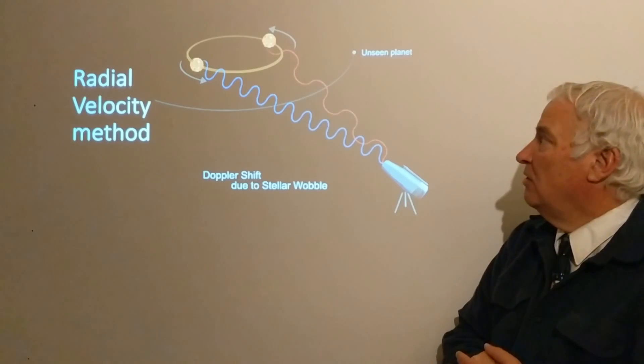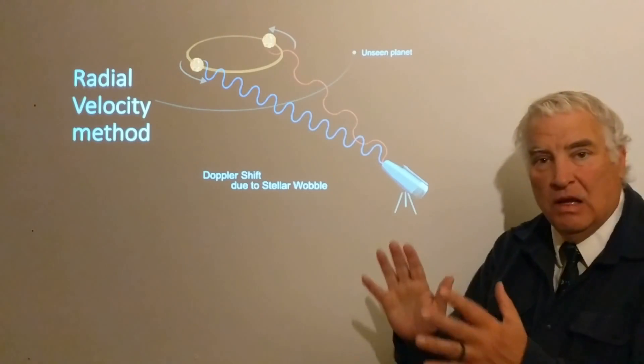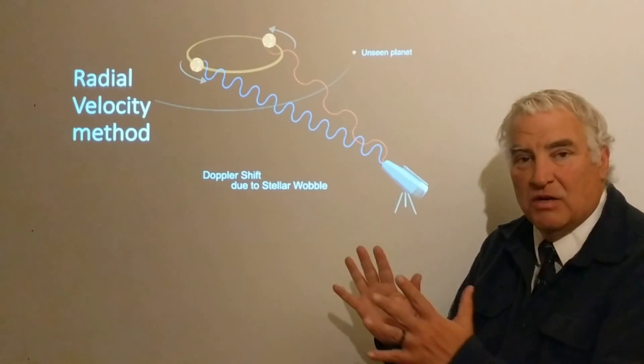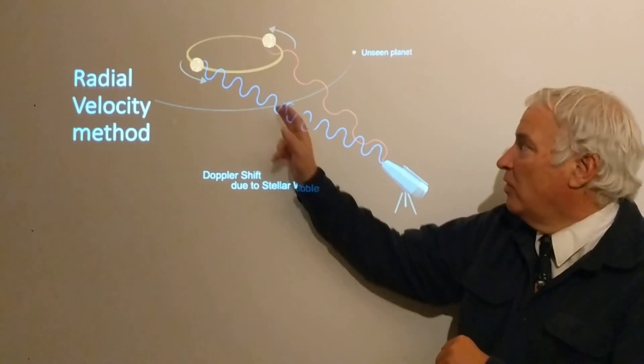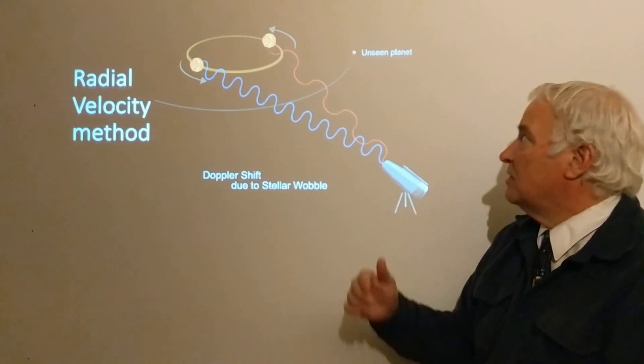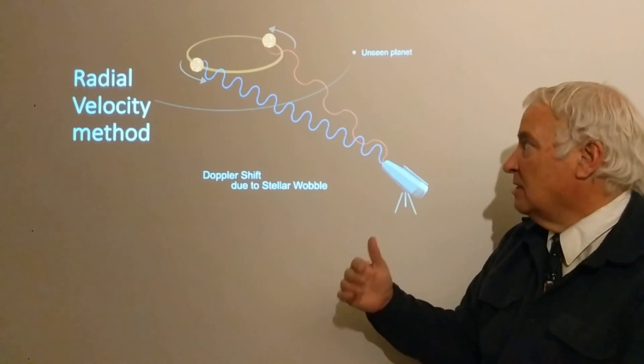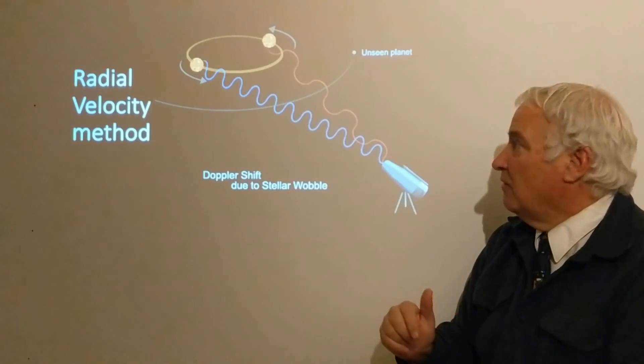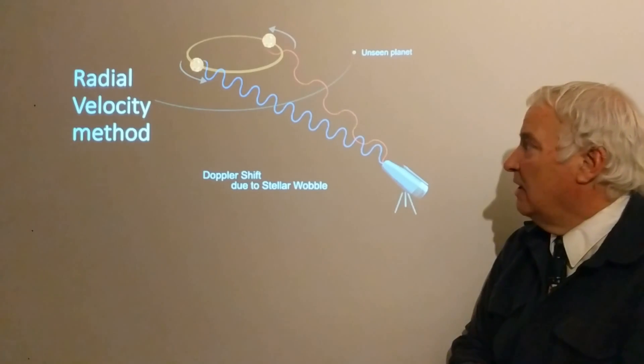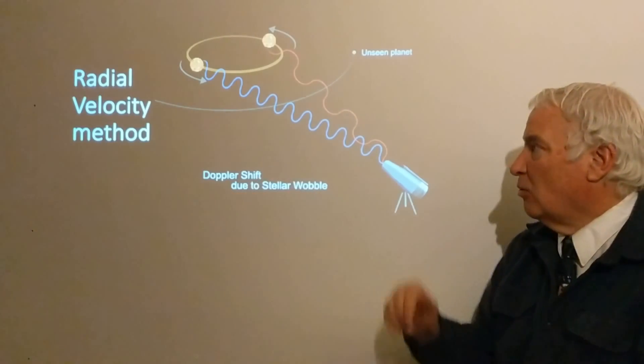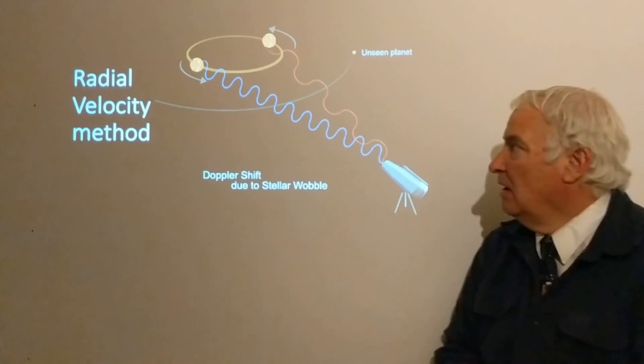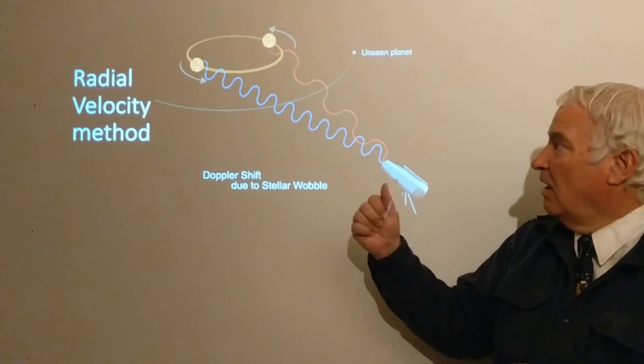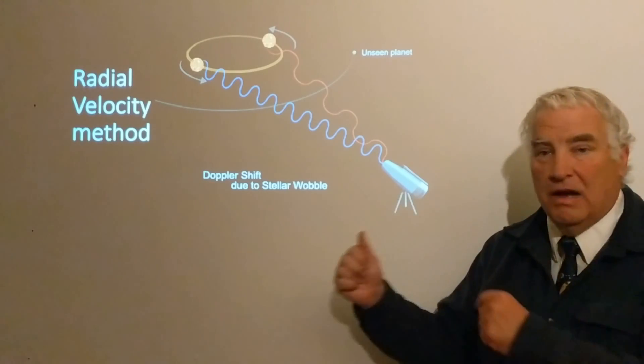If we can measure the spectrum of the star very precisely, then we can measure this shift over the period of several years or possibly a period of days, depending on the period of the planet in its orbit around the star. This is the stellar wobble or radial velocity method, due to the fact that the planet and the star act kind of like a binary system and are affected by each other's gravity.